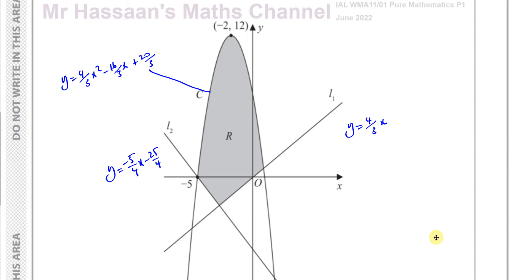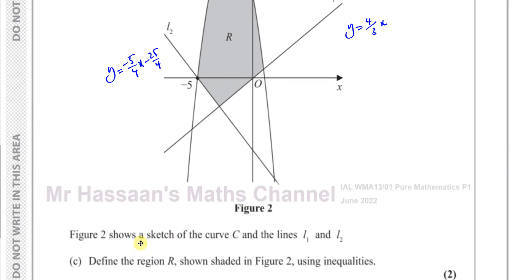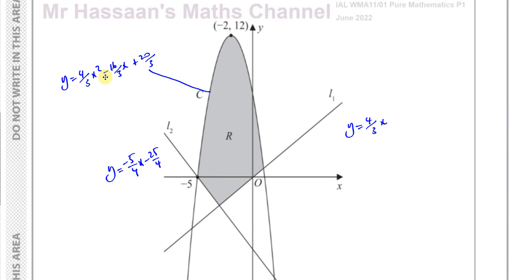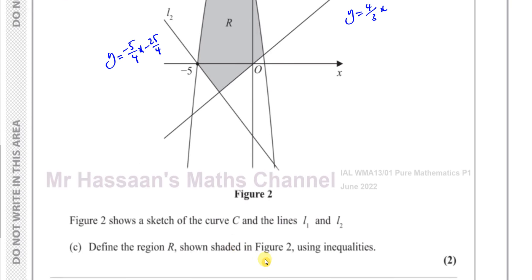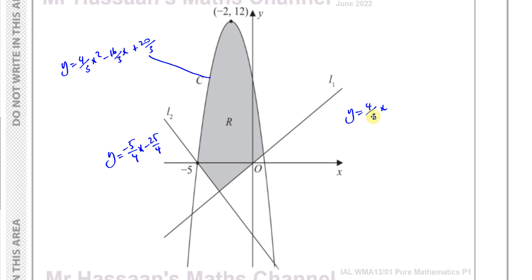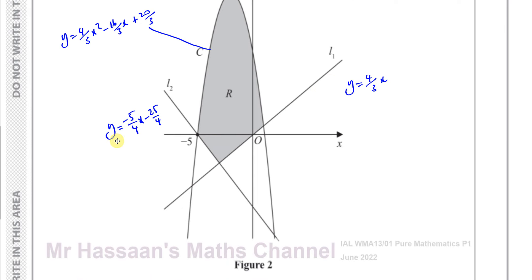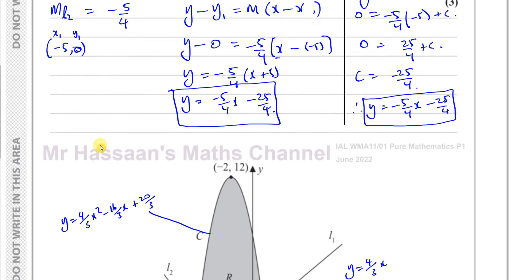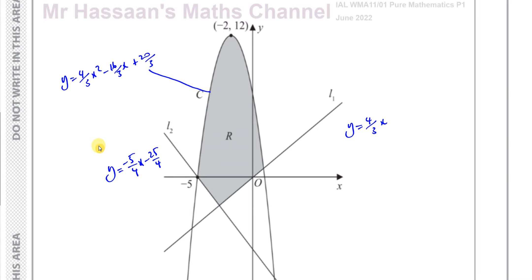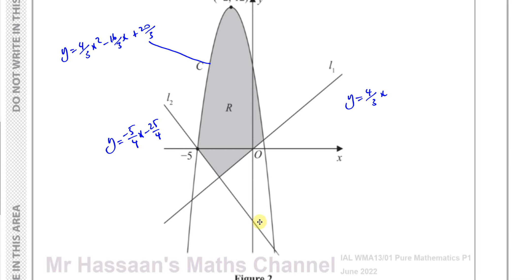We're given a sketch of curve C, whose equation we found in part a. We're also given line L1, which is y = (4/3)x, and line L2, which we found is y = -(5/4)x - 25/4.